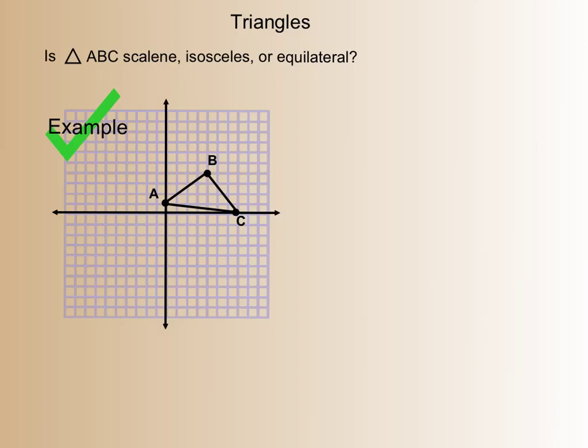So here's our first example. We're asked, given this triangle in the coordinate plane, is it scalene, isosceles, or equilateral? So the way we're going to determine this is we have to find what the lengths of our three sides are. And the length of a side is the same as the distance between those two points. So I have three points A, B, and C. Let's first identify what the coordinates of those points are.